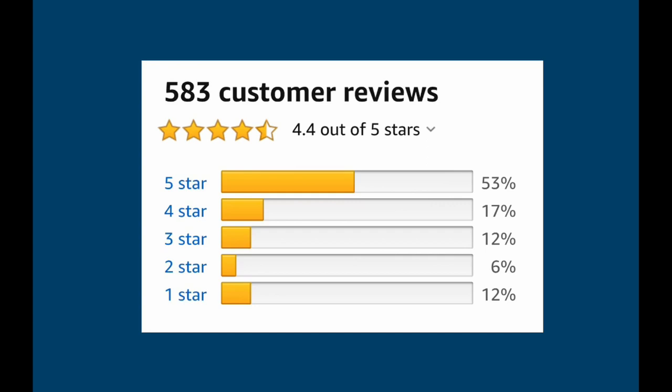So what you can do is count the number of reviews that have 5 stars, the number that have 4 stars and so on, and then draw a graph showing those counts. In this case the graph shows percentages but it looks exactly the same as it would if we were looking at counts, and you can now look at that and see some patterns.